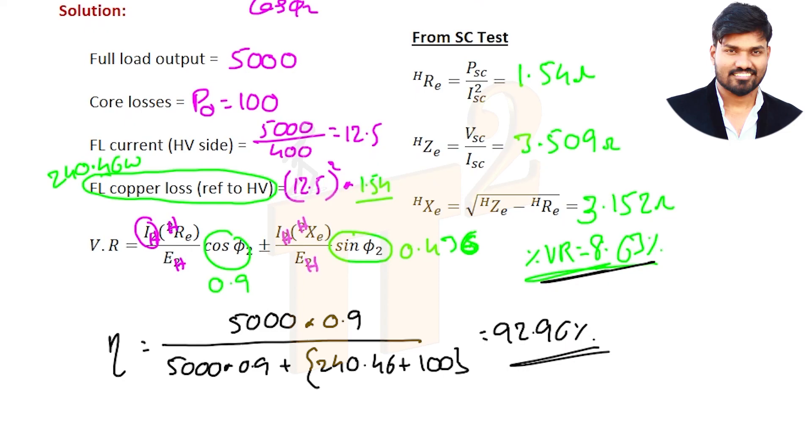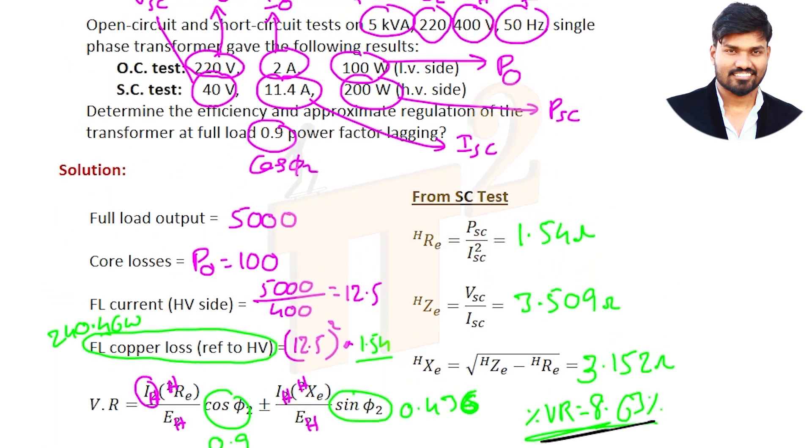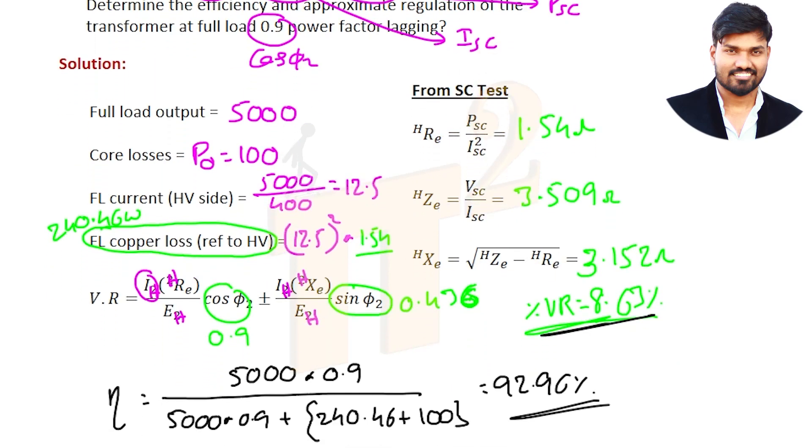What we had done is the moment you looked at it you just extracted this information. Once you get this information you are plugging the details in the formulas and using calculator. Calculator is doing everything once you write this table. This table is very important whenever you see OC SC test question.